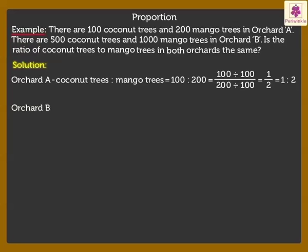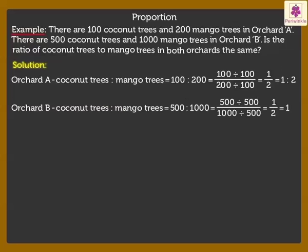In Orchard B, the ratio of the coconut trees to mango trees is 500 is to 1000 which is equal to 1 is to 2.